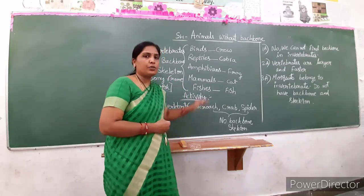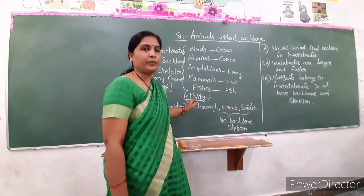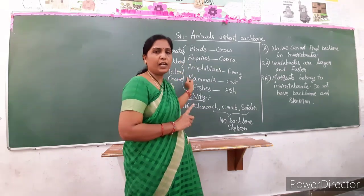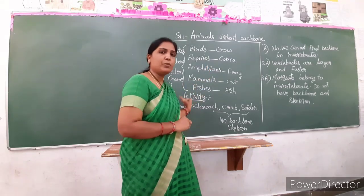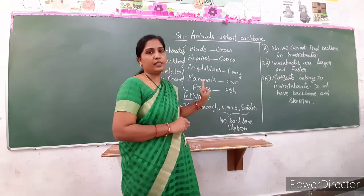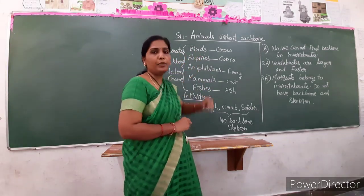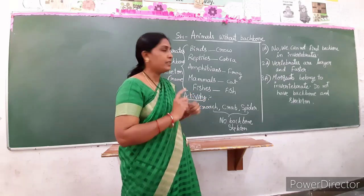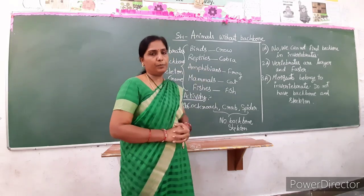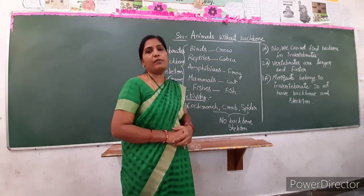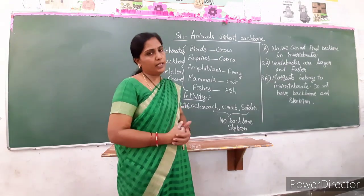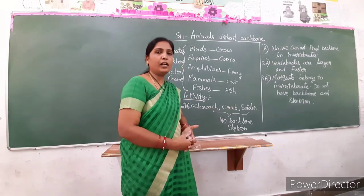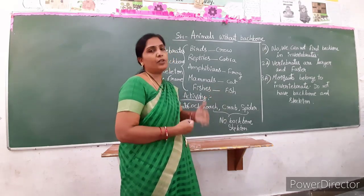Okay children, understood? So in today's lesson, what we discussed: what are vertebrates and what are invertebrates? The animals which have backbone and skeleton are known as vertebrates. The animals which do not have backbone and skeleton are known as invertebrates. Vertebrates examples are birds, reptiles, amphibians, and mammals - all belonging to the vertebrates group because they have backbone and skeleton. Animals like cockroach, crab, spider, mosquito, and housefly do not have backbone, so they come under the invertebrate group.